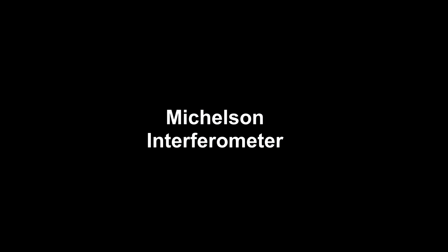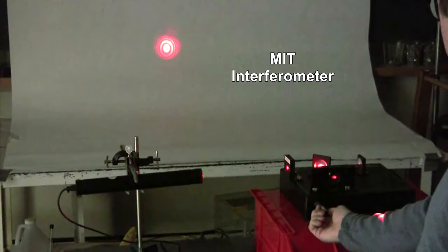What Michelson did was to leverage this light-interference behavior in what we now call an interferometer. Here's one from the MIT Physics Lab.